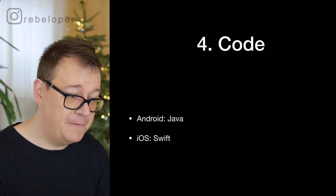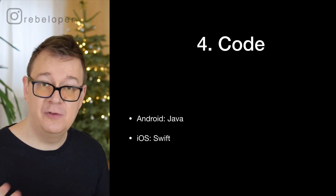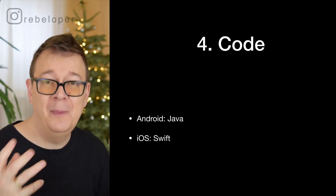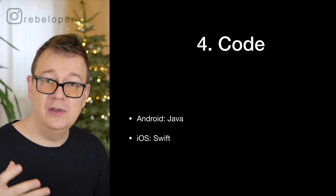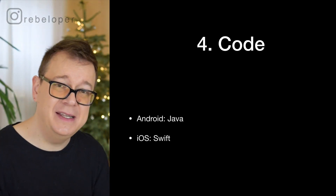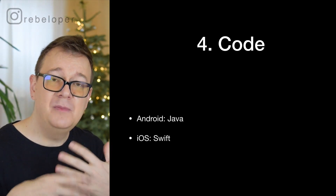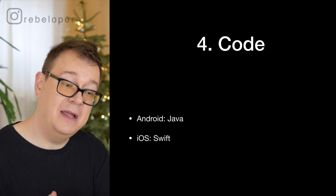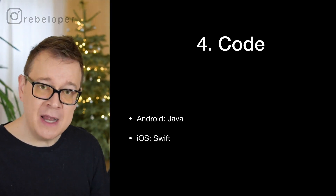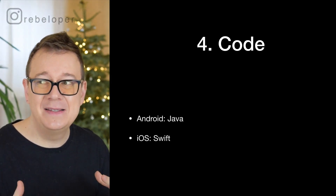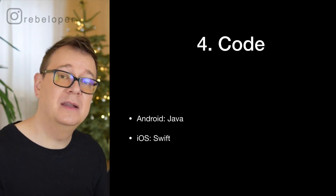The fourth thing to consider is the programming language. For Android that is Java, which is a robust language you have to get accustomed to. For iOS, Swift is a few years in and it's really easy to pick up and improve on — much faster to get accustomed to than Java. You could learn Objective-C for iOS, but that's for older apps; new apps are built with Swift only.